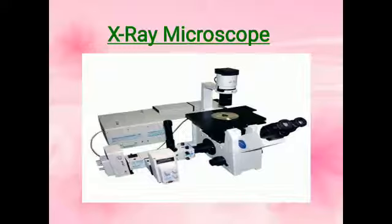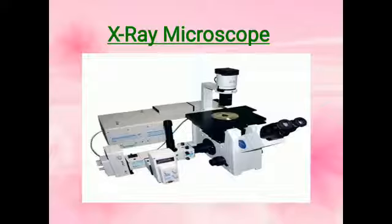Next, x-ray microscope. The instrument that uses x-rays to produce enlarged images of small objects is called x-ray microscope. The basic device uses the emission of x-rays from a point source to cast an enlarged image on a phosphorous screen. X-ray microscope was made in 1951 by British physicist Ellis Kessley and William Nixon.